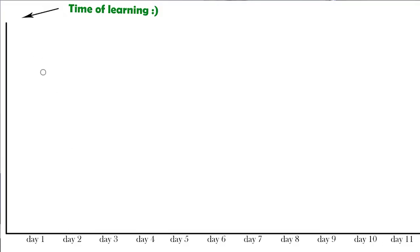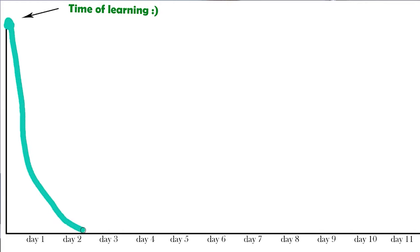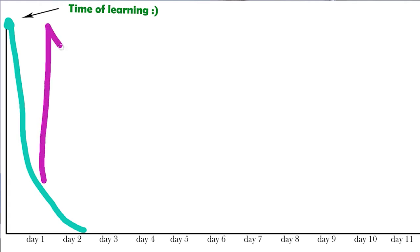So for example, say if you learn something new and within two days the forgetting curve goes all the way down to zero and you've completely forgotten it — what do you do? After learning it, you then relearn the content the day after. That way, the curve resets and goes right back up to the top and starts all over again.